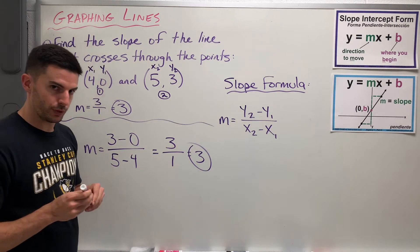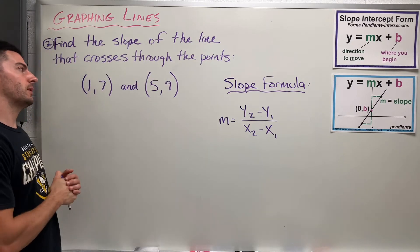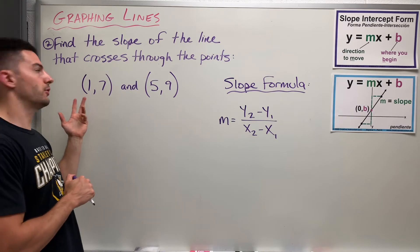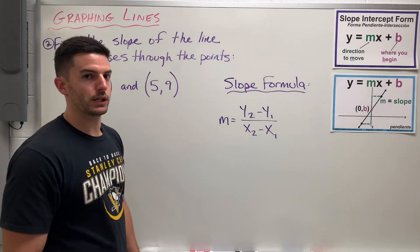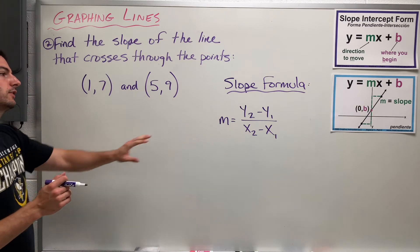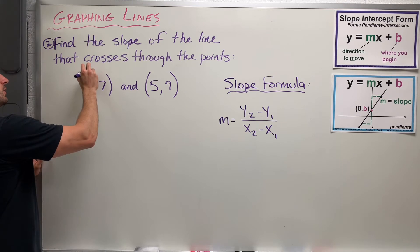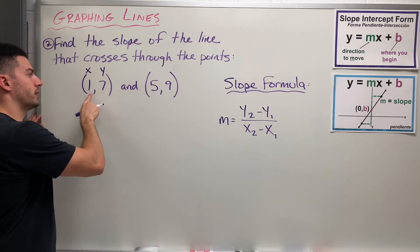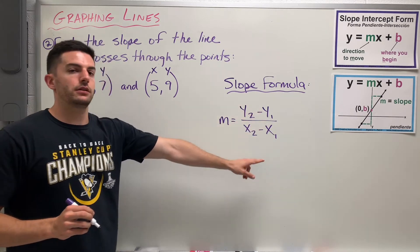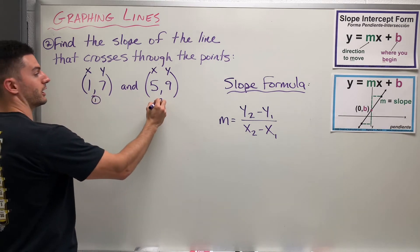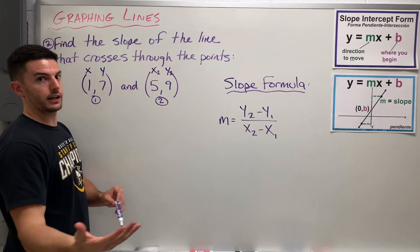We'll do a couple more examples and get more comfortable with this slope formula. Example 2 says: find the slope of the line that crosses through the points (1, 7) and (5, 9). We don't have a graph here, so let's do this with the slope formula. The first step is to label these values — for every ordered pair, the first number is x and the second number is y. This is the first point and this is the second point — so the second point gets x2 and y2, and the first point gets x1 and y1.